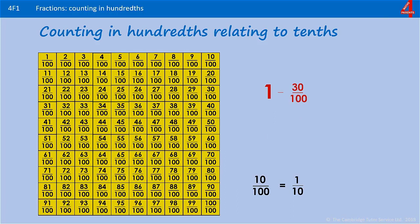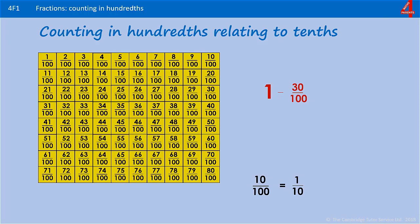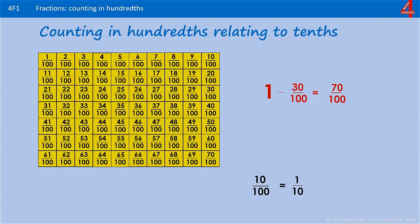This time we have one take away thirty hundredths. Pause the video and have a go at solving that. We're taking away thirty hundredths — ten hundredths, twenty hundredths, thirty hundredths — which leaves us with seventy hundredths. To take away thirty hundredths: how many rows of ten did we take away, and how many rows of ten are we left with? We took away thirty hundredths, which was three rows of ten, so we've taken away three tenths. And we have seven rows of ten left, so we have seven tenths left.